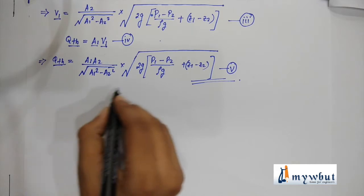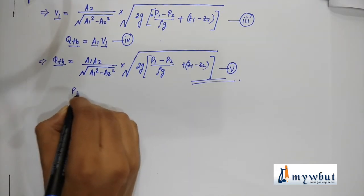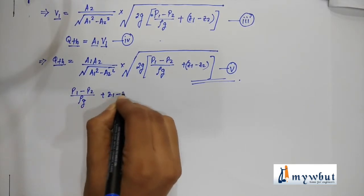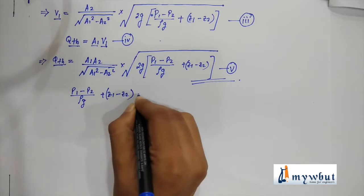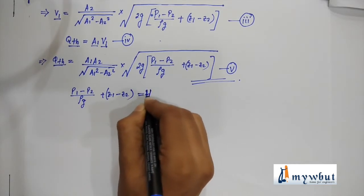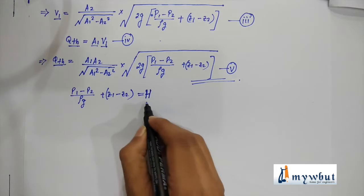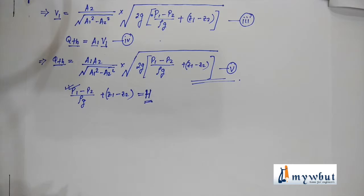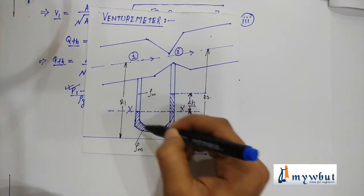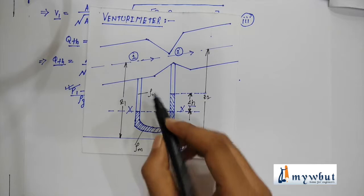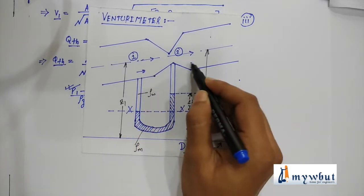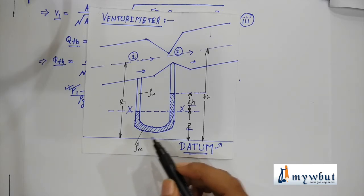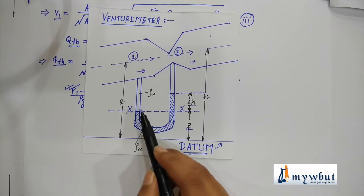Let us consider the term p1 minus p2 by rho G plus z1 minus z2 equal to capital H. Let us now find out the value of H in terms of the manometer attached with the venturimeter. We have two kinds of fluids — water flowing through the venturimeter and the manometric fluid — so let us find the value of capital H in terms of these two fluid densities.